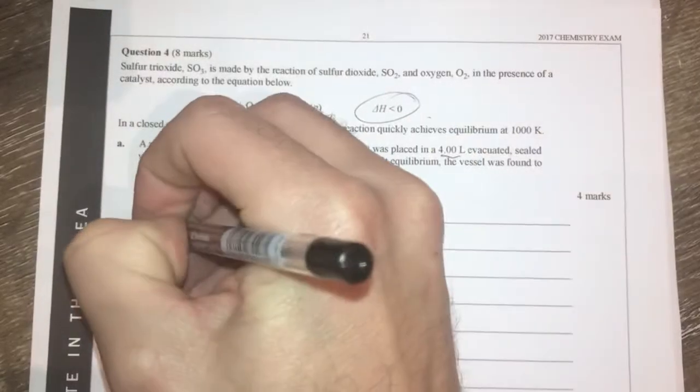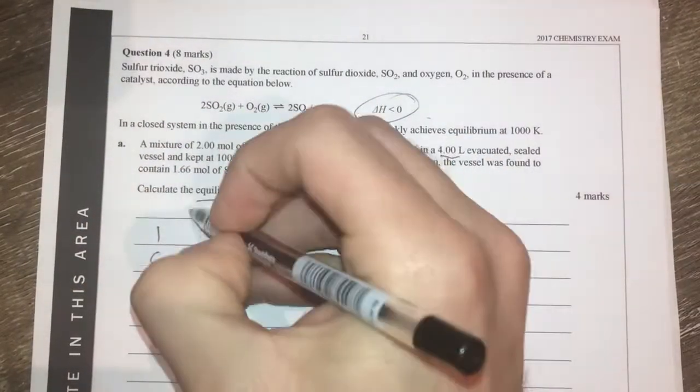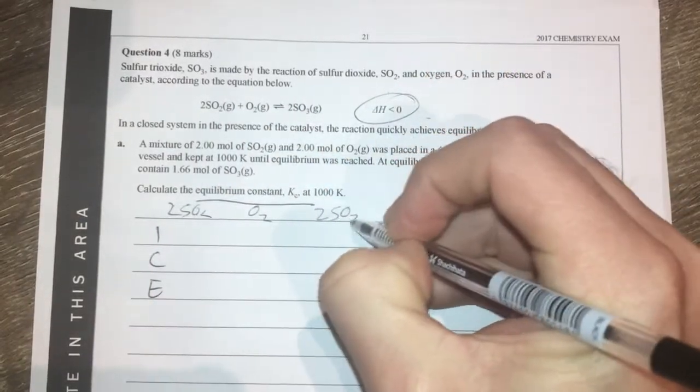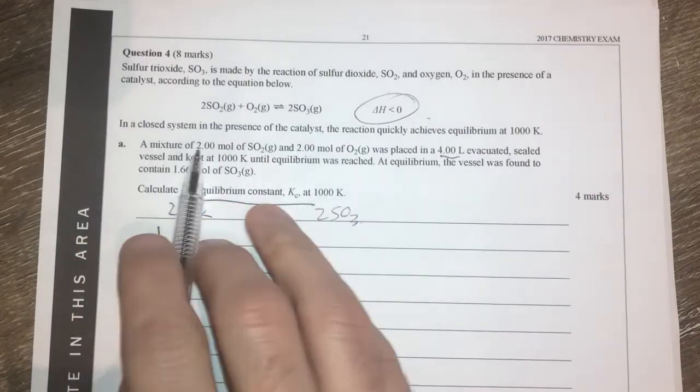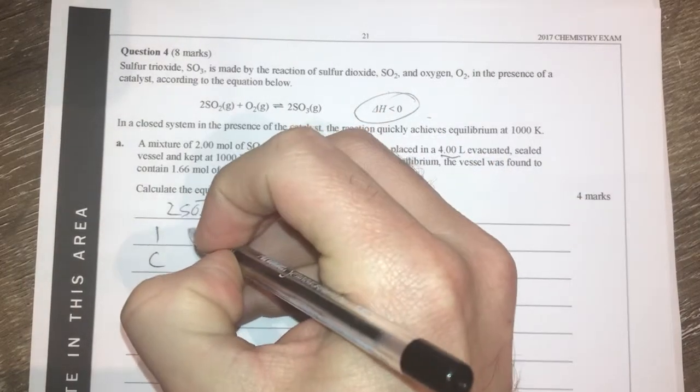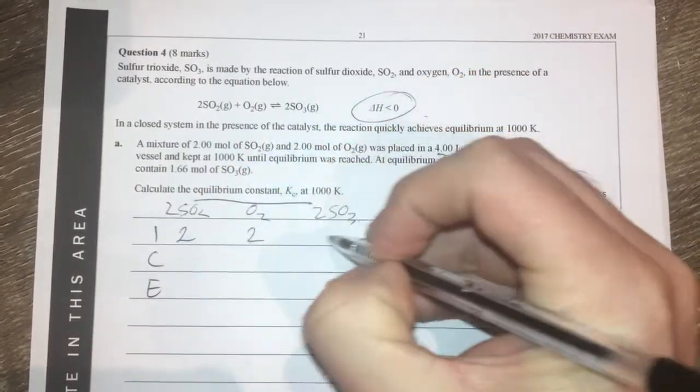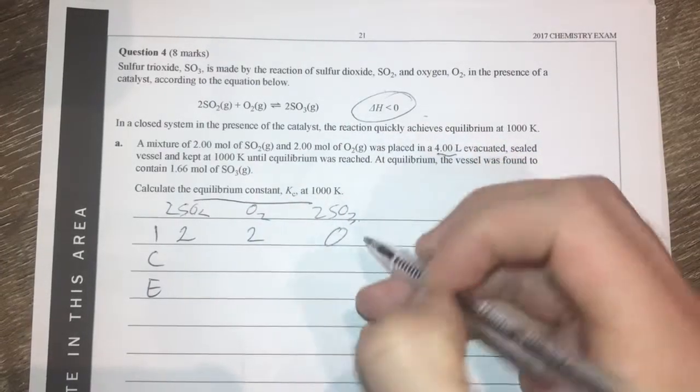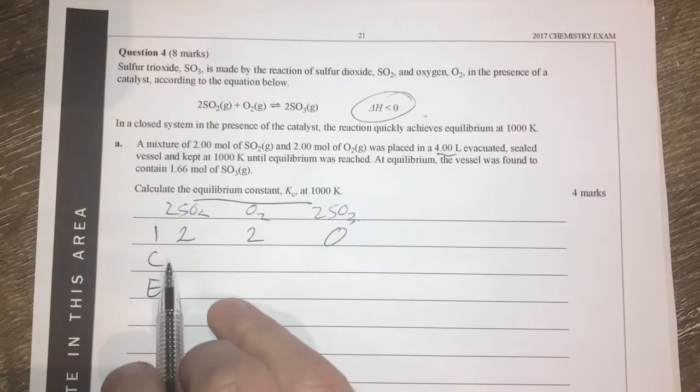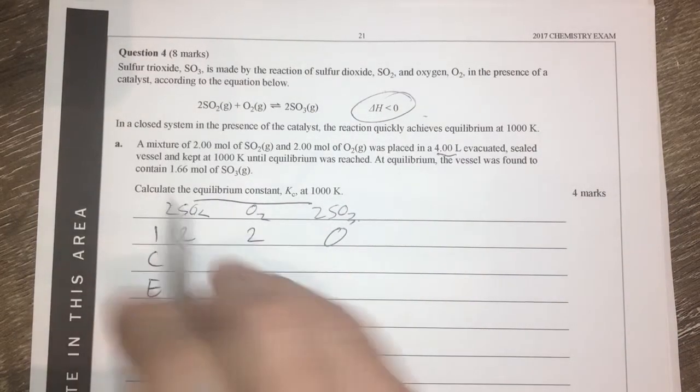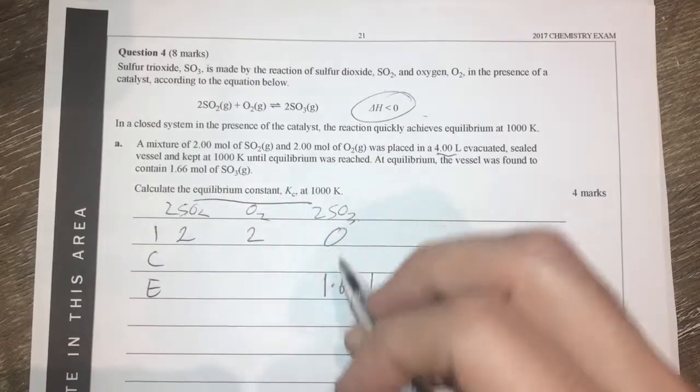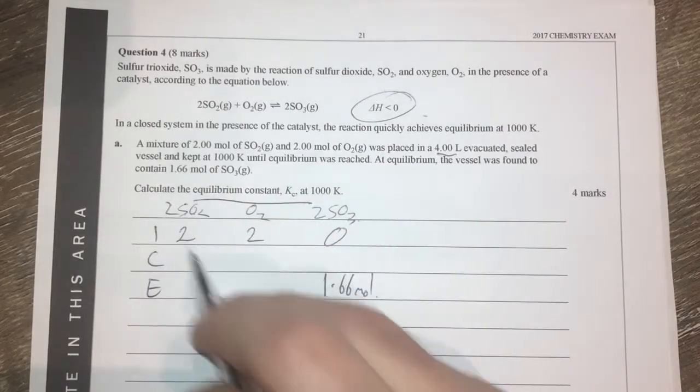That means we're using an ICE table. We're going to start off with sulfur dioxide, two of those, and oxygen, and two sulfur trioxide. ICE table because we're starting off with something we have an initial value and we have an equilibrium value. We're going to have two moles of that and two moles of that and we didn't have any of that because it was an evacuated sealed vessel. At equilibrium I've got 1.66 moles of that. Notice these are all in moles so therefore I'm keeping it consistent in my ICE table here as well.